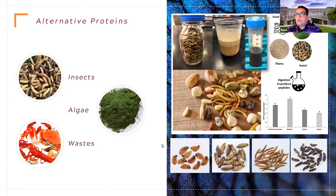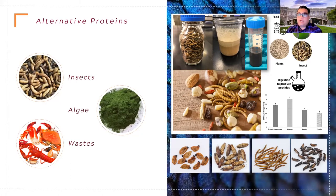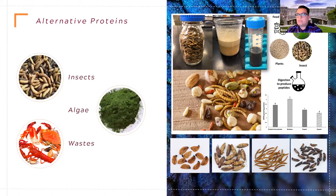We work with different types of alternative proteins, including insects, algae, waste streams, edible insects, and non-edible insects like black soldier fly. We feed them with different types of waste streams and try to recover protein and bioactive compounds from them. We also work with different bioprocessing methods — fermentation, enzymatic digestion, and chemical extraction — to develop value-added products for different applications, including cellular agriculture.